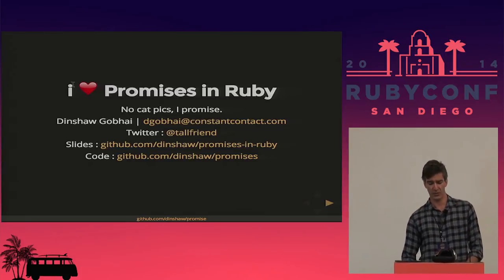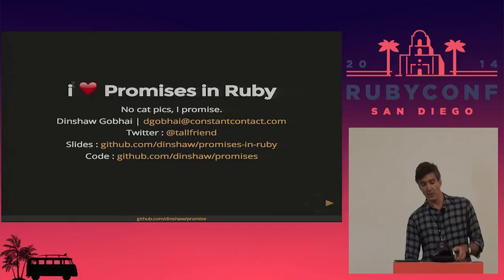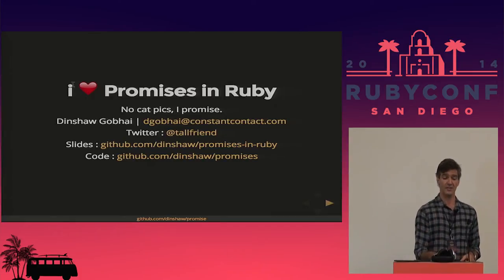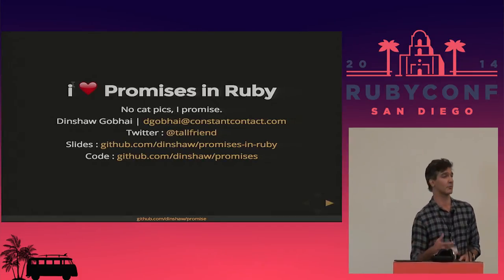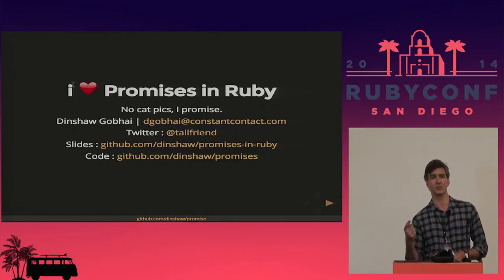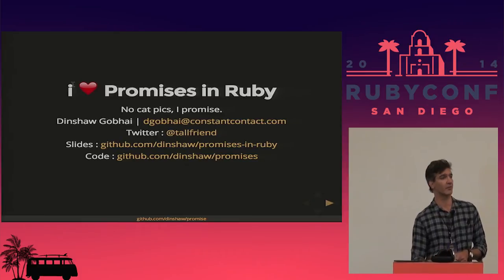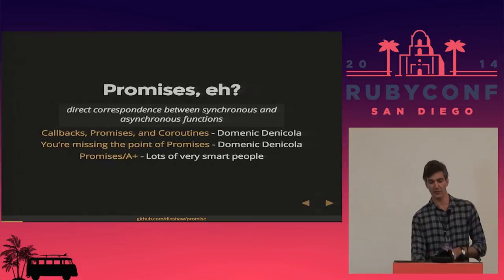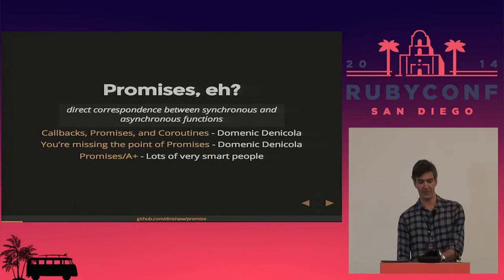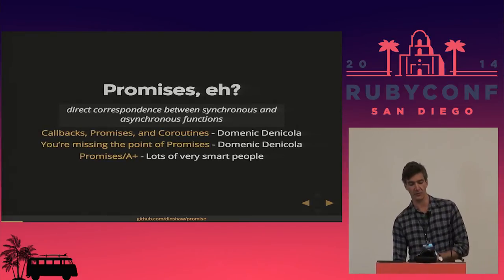We're going to do a lot of code — we're going to go through the code that we're currently using. If you want to follow along, there are links to peripheral reading at github.com/dinshaw. I also just tweeted both the slides and the code base at tallfriend. The code is also down in the footer.